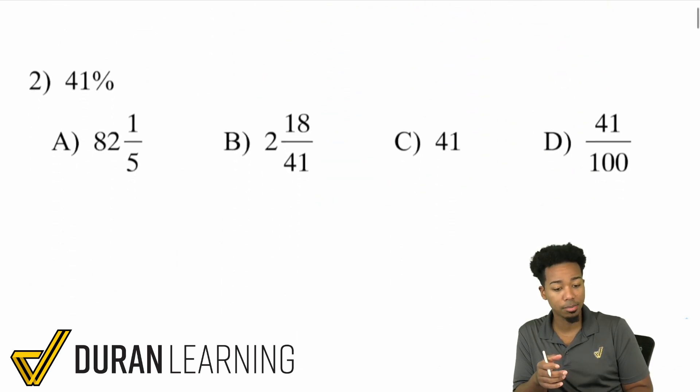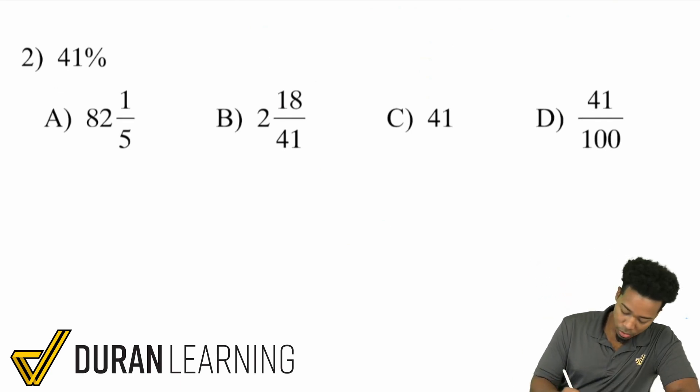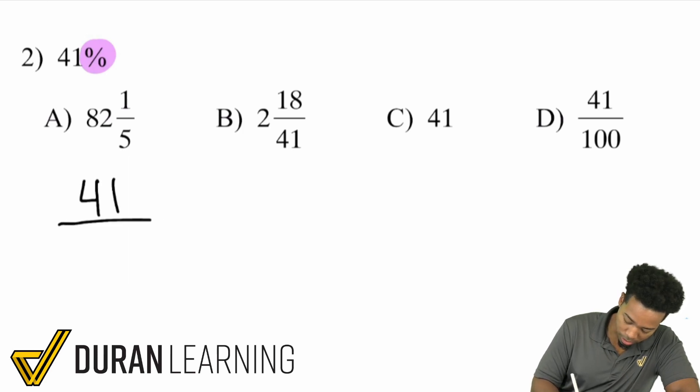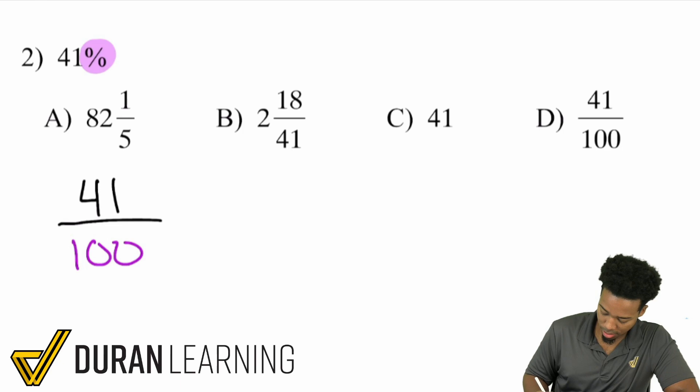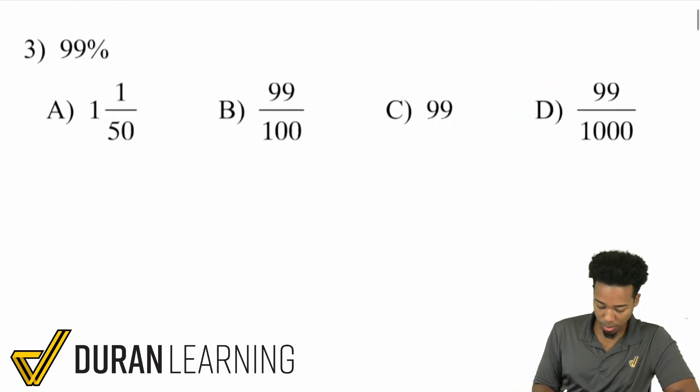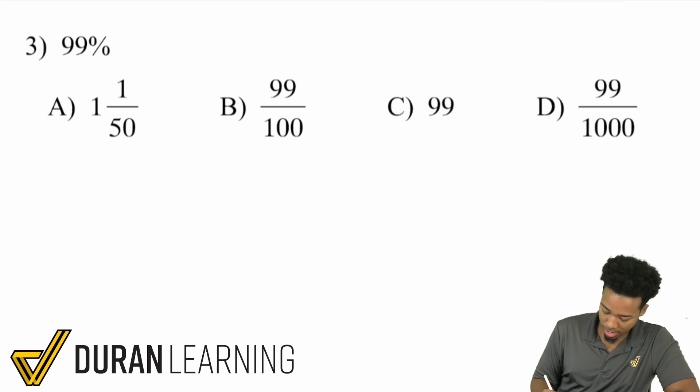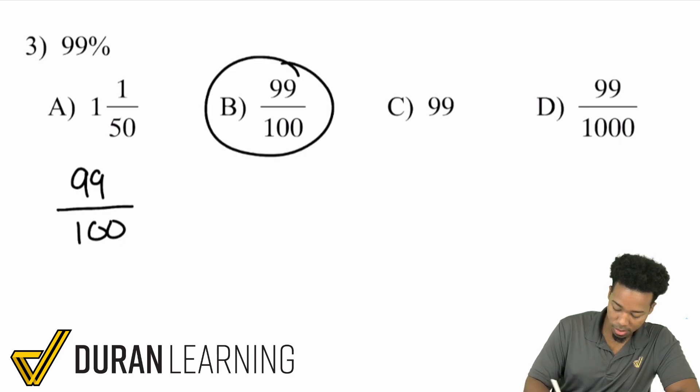So let's take care of 41%. The percent right over here will turn this into 41 out of 100. Just like that. And over here, there's really nothing else to be done. Because 41 is a prime number. There's nothing else that can go into 41 and 100 at the same time. So you're done. Your answer is D. 41 out of 100. Next up with number three, 99%. Again, that'd be the same thing as saying 99% per 100.